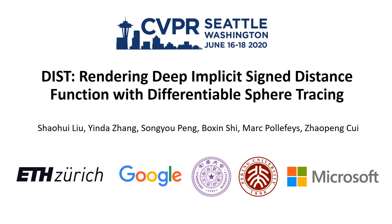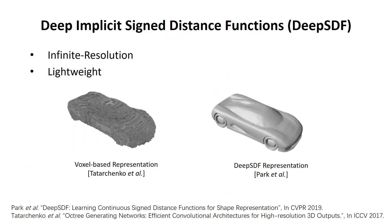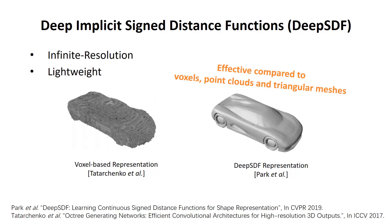We present DIST, a differentiable renderer for implicit signed distance functions. Compared to other shape representations, deep implicit functions provide fine details. However, due to the lack of a differentiable renderer, it cannot be optimized over 2D observations.